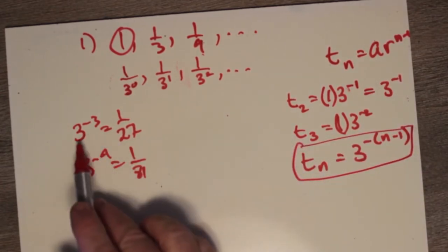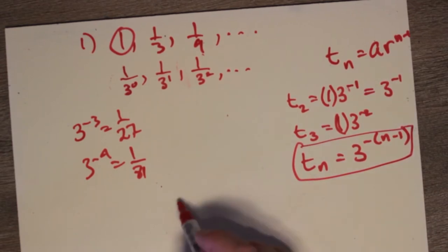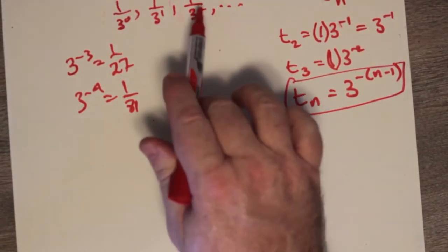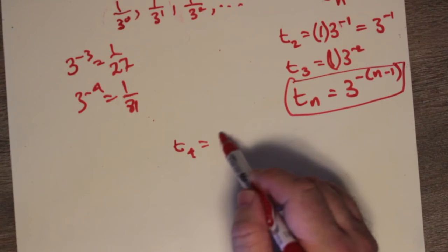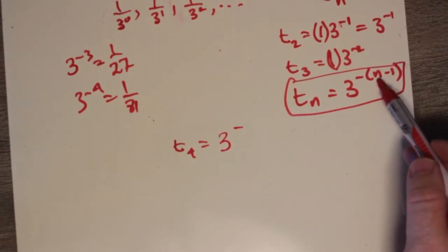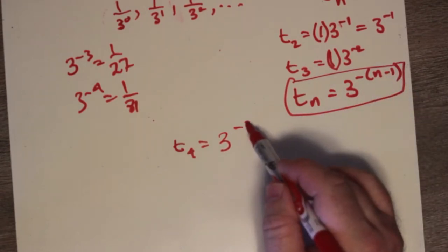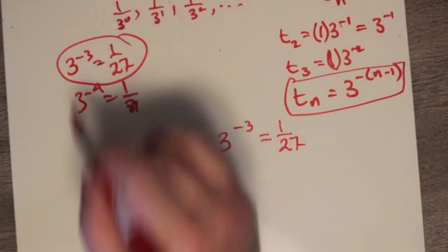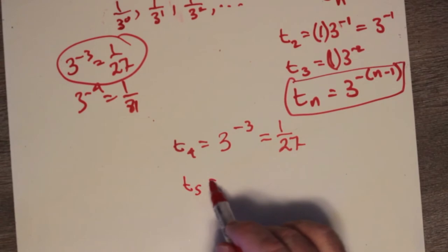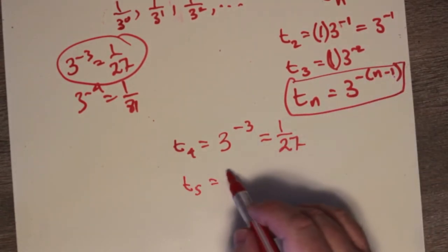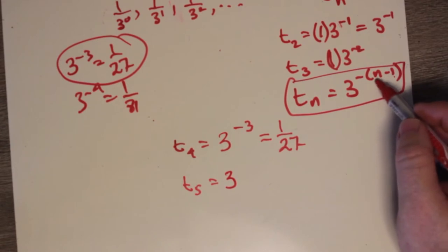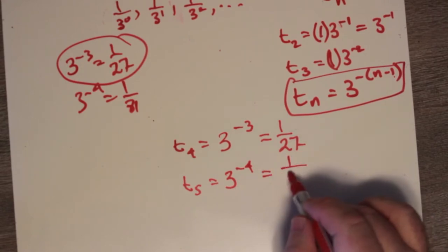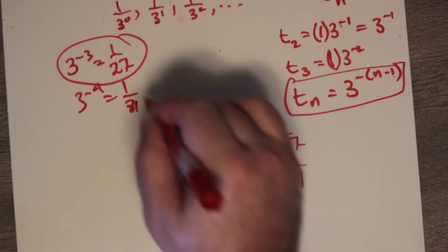Using this formula, t4 is 3 to the negative (4 minus 1), which is 3 to the negative 3, equals 1 over 27. And t5 is 3 to the negative (5 minus 1), which is 3 to the negative 4. Since 3 to the 4 is 81, 3 to the negative 4 is 1 over 81. That matches.